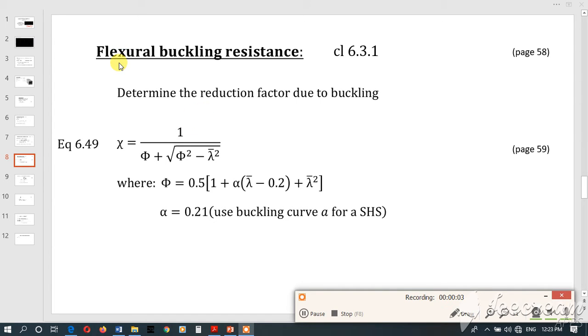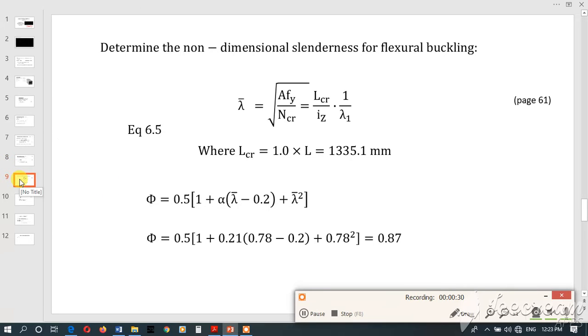In order to satisfy flexural buckling resistance, we use this relationship. We have to find these values. There's alpha - we found alpha from the code, according to the buckling code. Then there is lambda bar. Lambda bar is related from this relationship, so we needed...